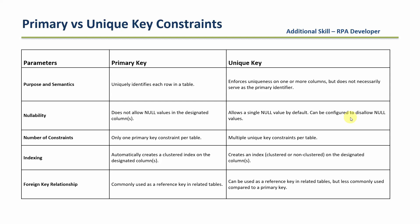The next difference is in indexing. The primary key creates a clustered index, whereas the unique key can create a clustered or a non-clustered index. The last difference is the foreign key relationship. Whenever you are using a foreign key, we use the primary key as a reference to the other table. When it comes to the unique key, it can be used as a reference, but is less commonly used compared to the primary key — because you can have more than one column as a unique key, you can have null values, and you can have multiple unique identifiers. So that is why it is less commonly used as the foreign key, whereas the primary key is most commonly used when joining two tables in a relationship.